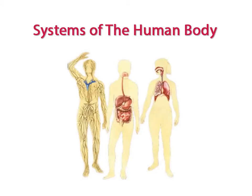Now that you are beginning your studies of the systems of the human body, it is important to remember that you will always be required to visually identify the structures of the system you are working on from various diagrams, so be sure to pay particular attention to them. You will also be expected to describe the function of each structure and in some cases explain how the structure is specialized to perform its function.